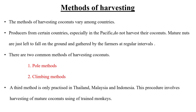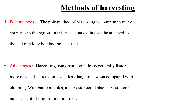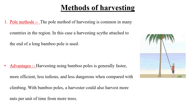There are many methods of harvesting which vary across countries. However, two common methods are the pole method and the climbing method. In the pole method, the harvested nut is taken from the tree with the help of a harvesting fishet attached to the end of a long bamboo pole. The advantage is that using a bamboo pole is generally faster, more efficient, less tedious and less dangerous compared with climbing.